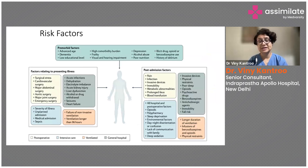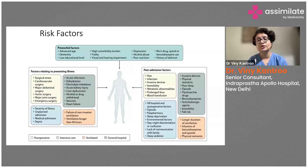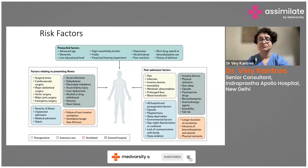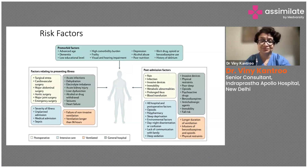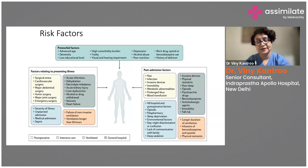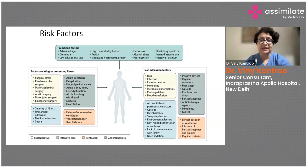There are many risk factors and precipitating factors for delirium in ICU patients. Non-modifiable pre-morbid factors include advanced age — the higher the age, the more prone the patient is to delirium. A history of dementia with forgetfulness means delirium can be super-added on top of dementia, worsening confusion. Low educational level is also a risk factor.